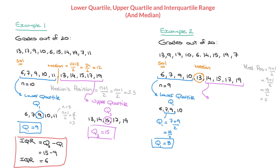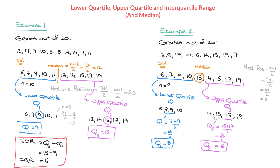For the upper quartile Q3, we work with the upper portion: 14, 15, 17, and 19. The median of this list lies between 15 and 17, so Q3 equals (15 + 17) / 2 = 32 / 2 = 16. Finally, the interquartile range IQR equals Q3 minus Q1 = 16 minus 8, which equals 8.